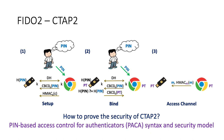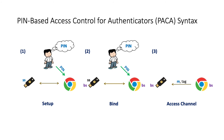To analyze the security of CTAP2, we again need to define a general protocol syntax and security model. We call this type of protocol a PIN-based access control for authenticators protocol, or PAKA protocol. In general, we still have three phases. For the setup phase, the token outputs some static storage SS. For the binding phase, the token takes that static storage and in the end the token and client both output some binding state respectively. For the access channel phase, the client uses that binding state to generate an authentication tag and sends it along with the message to the token for verification.